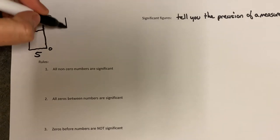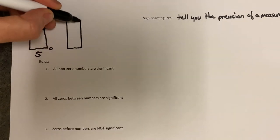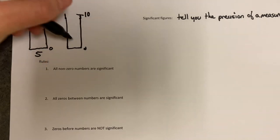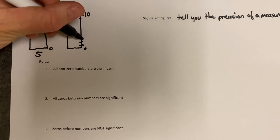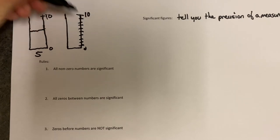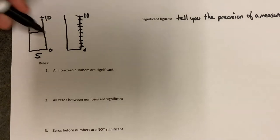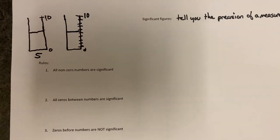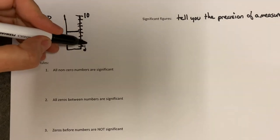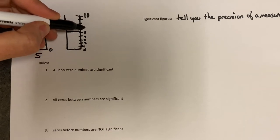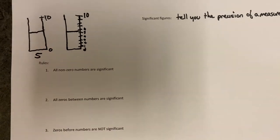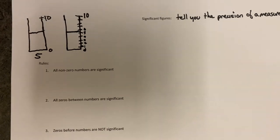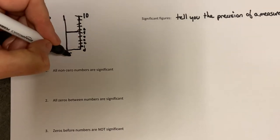Let's add another graduation mark. Same container, zero to ten, but now we also have one, two, three, four, five, six, seven, eight, nine marked. The line is at the same level. Now this is one, two, three, four, five, six — and now you can say it's somewhere between five and six. It looks like it's maybe a little bit closer to five, so you might guess that's 5.4.